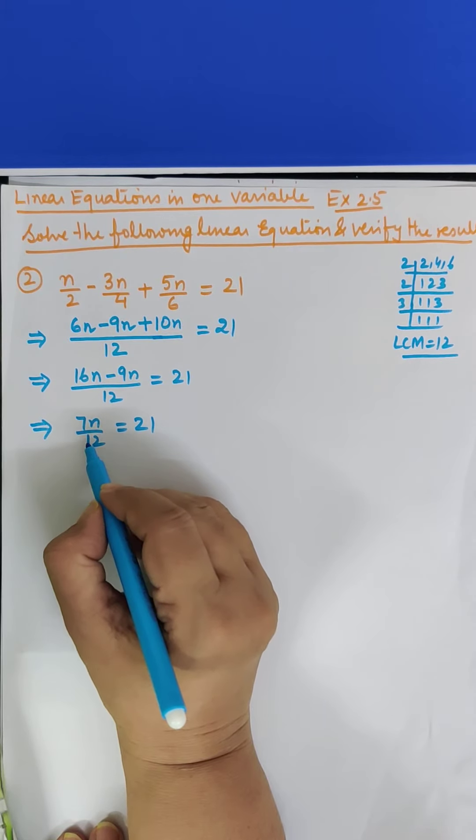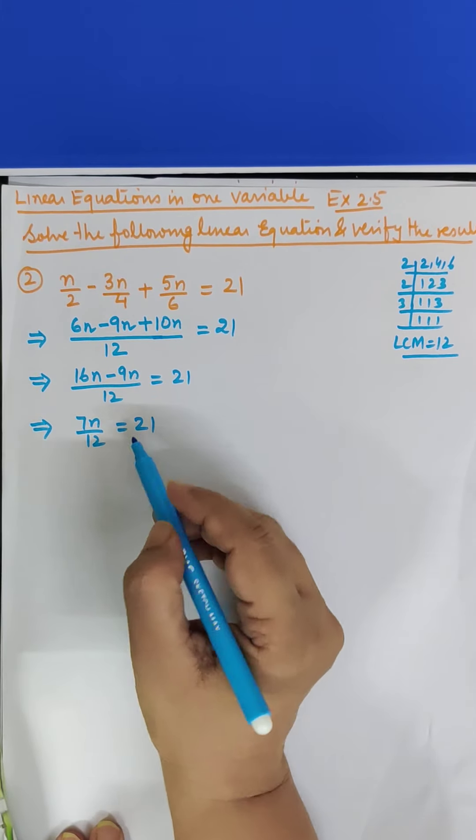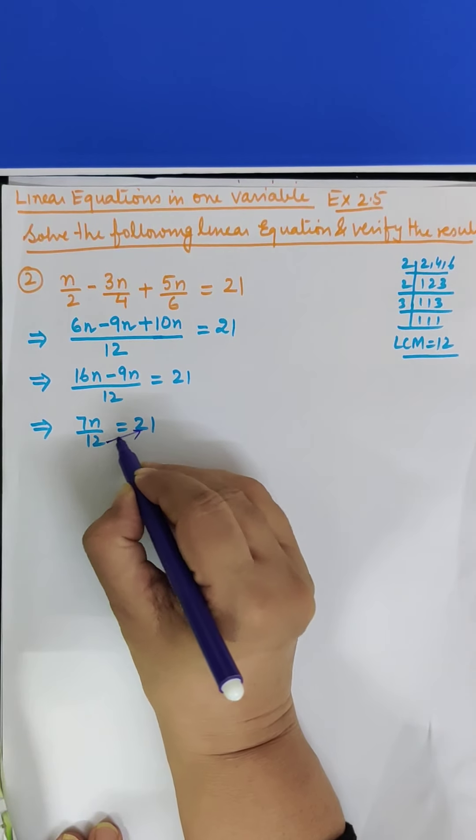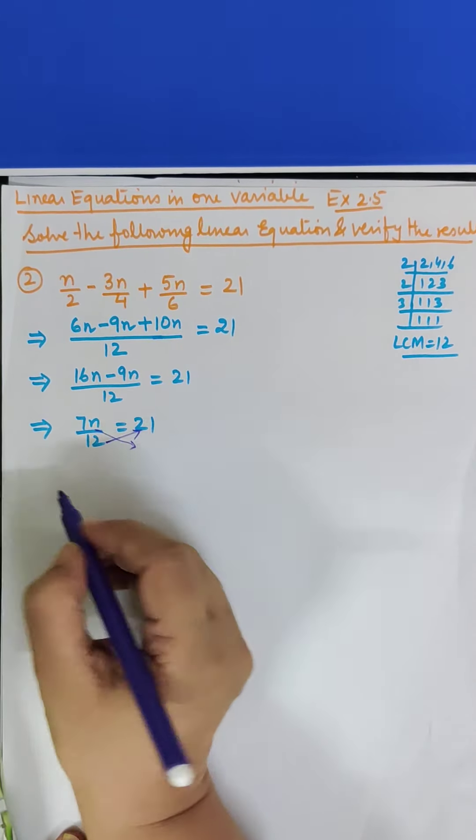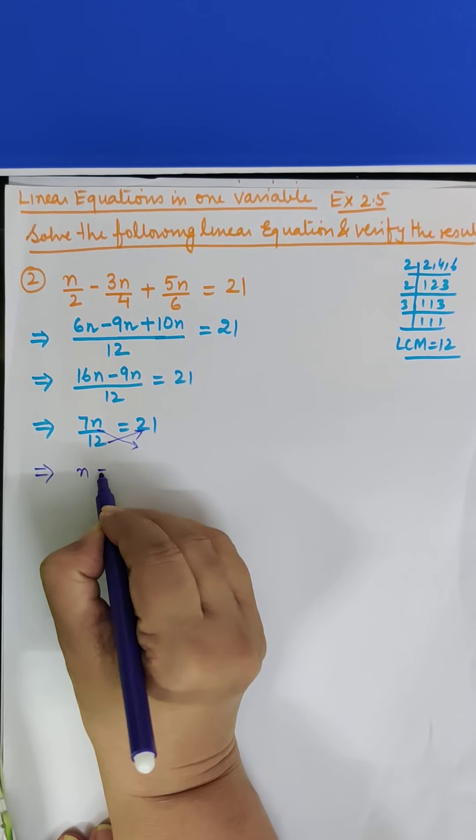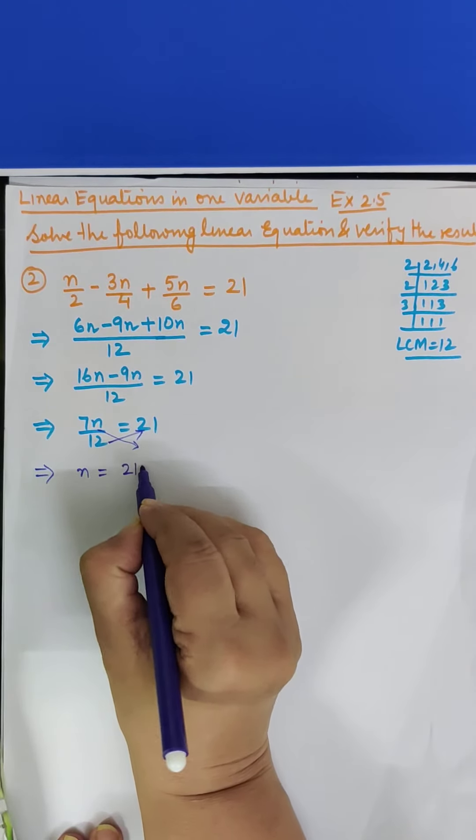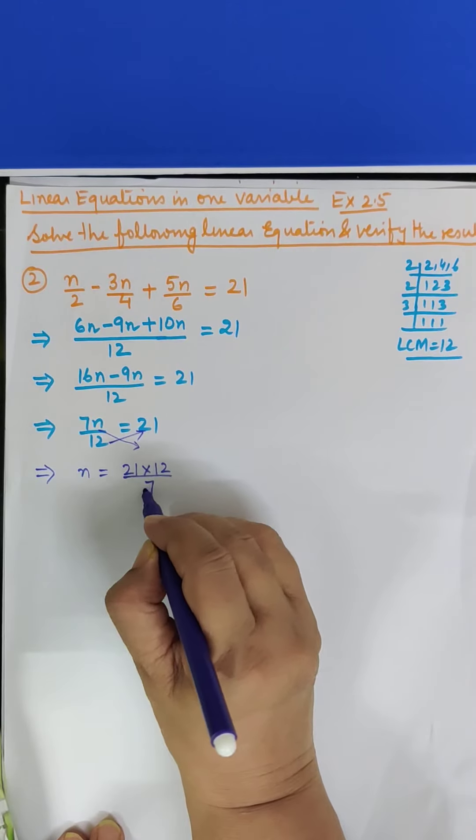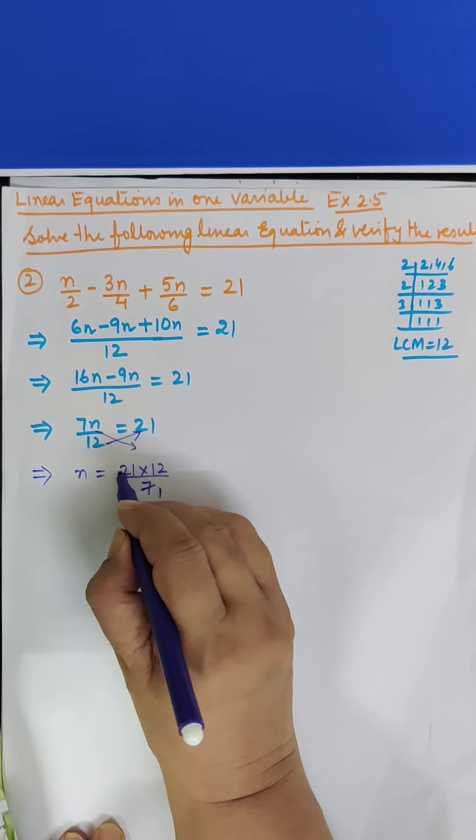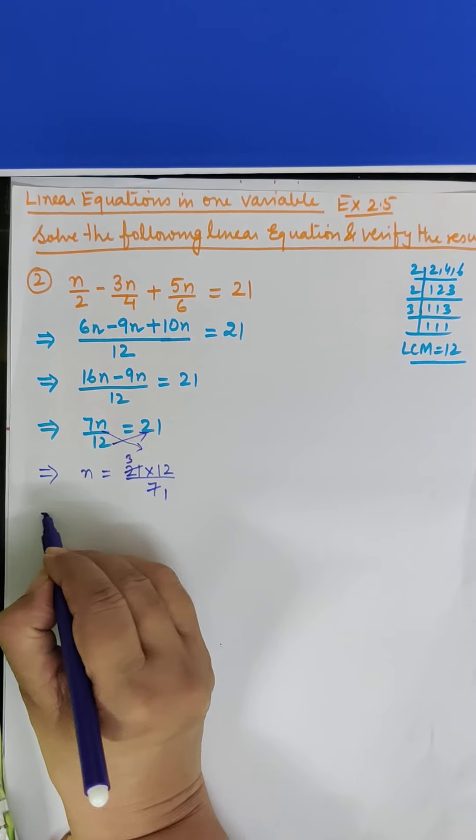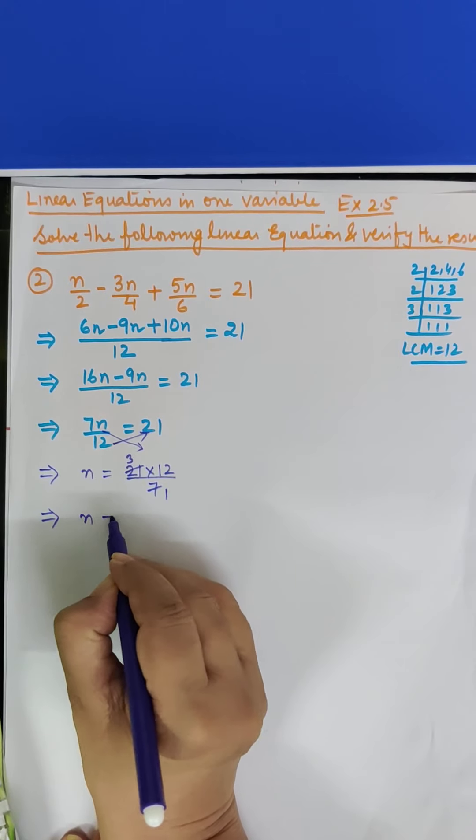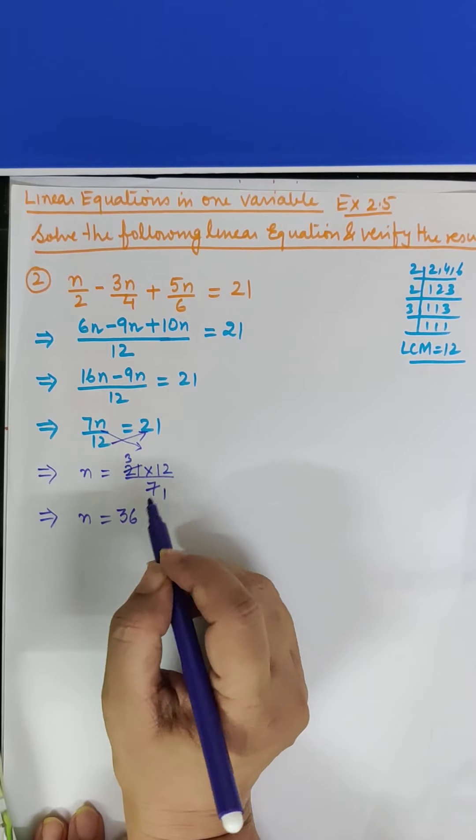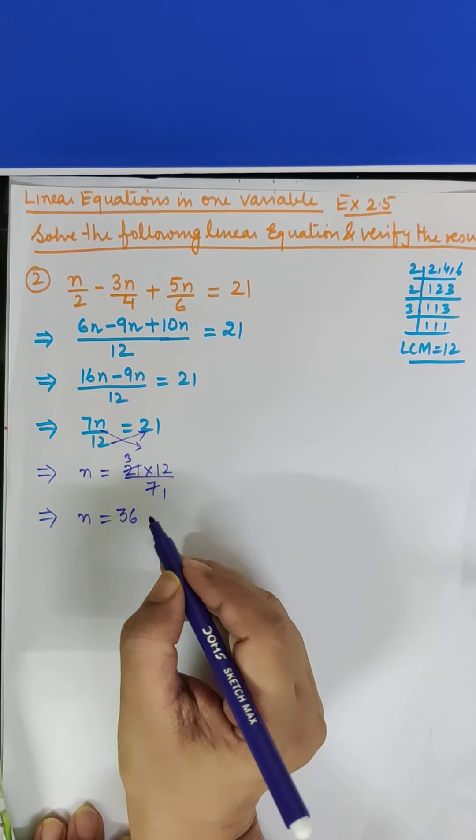Now we have to find the value of N. So 7N upon 12 has to come here. So for that what can we do? We can cross multiply. 12 will go up, 7 will come down. So what will we get? N is equal to 21 into 12 upon 7. Now cancel. 7 ones are 7, 7 threes are 21. This implies that N is equal to what? 3 into 12 is 36. So the value of N we got is 36.